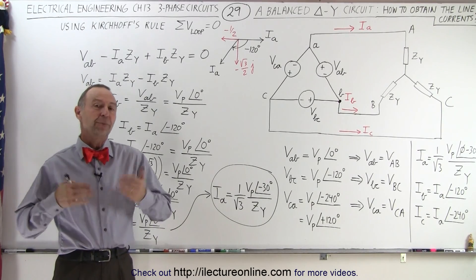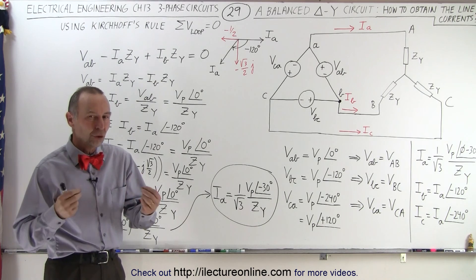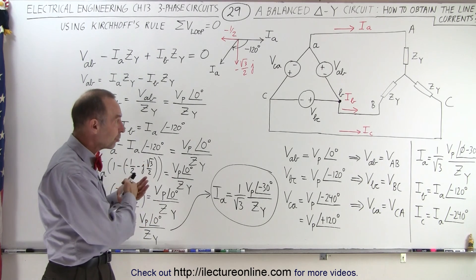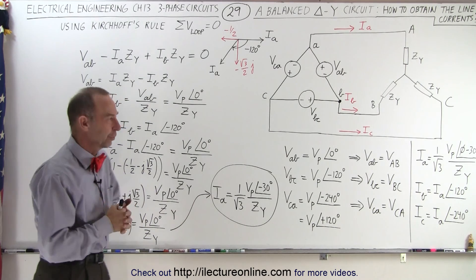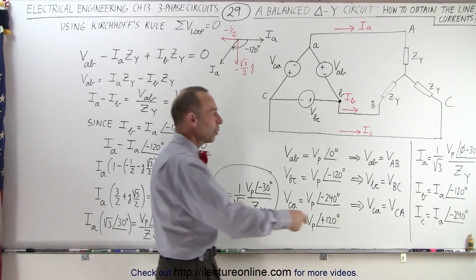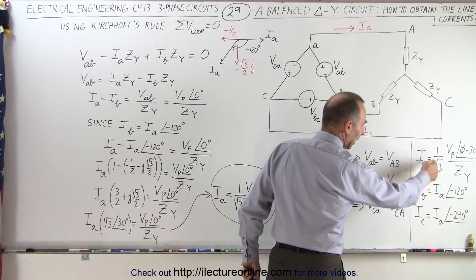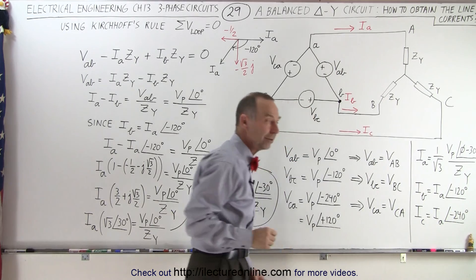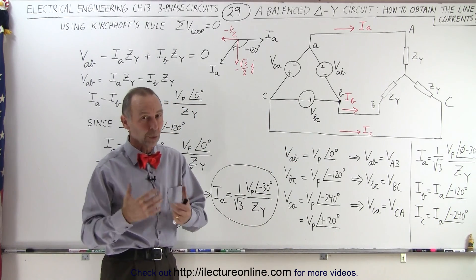Welcome to Electron Line. In the previous video we talked about a delta Y circuit and showed you that the line voltages are equal to the phase voltages and the line currents are equal to the phase currents. We also came up with an equation where we could calculate the line current as being equal to this equation right here, but we didn't show you why that was the case. In this video we're going to do that.